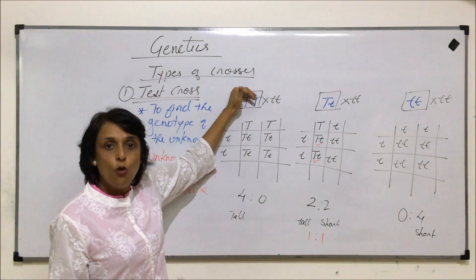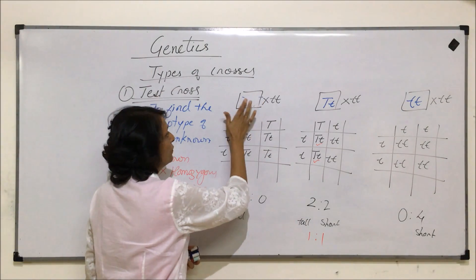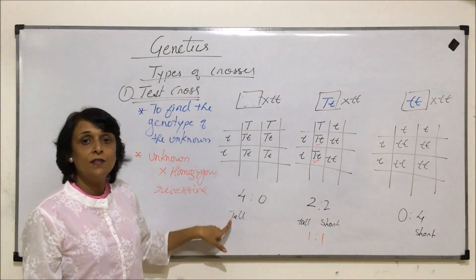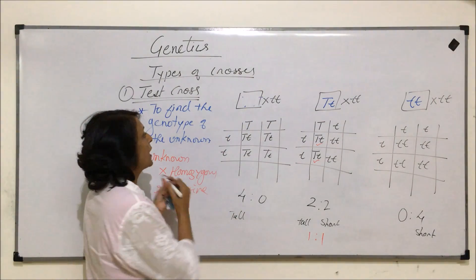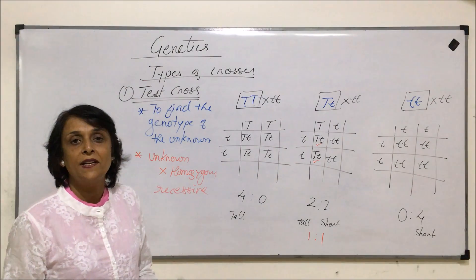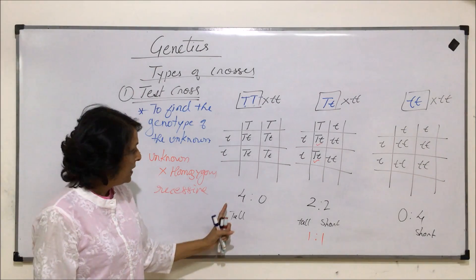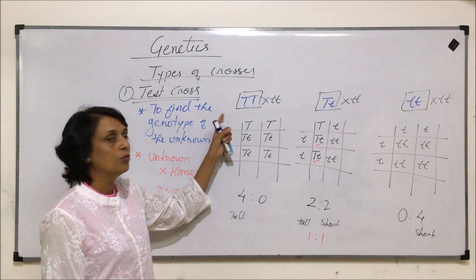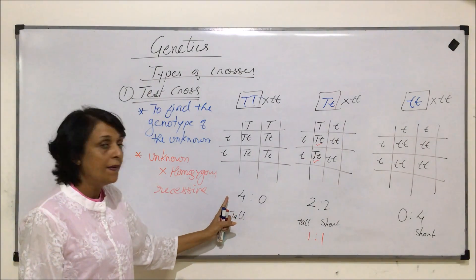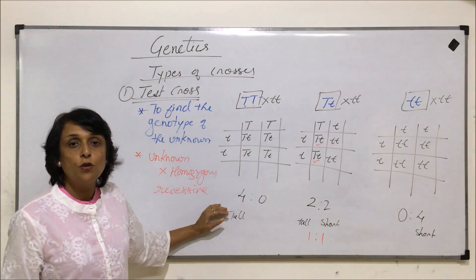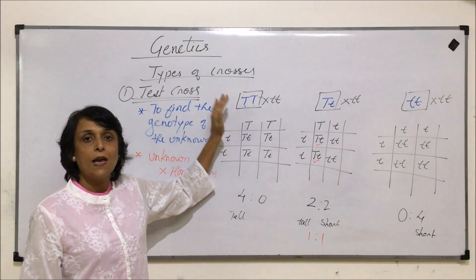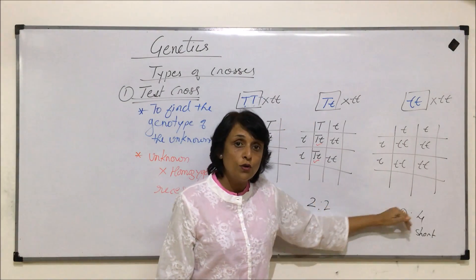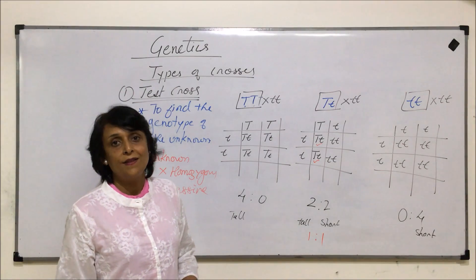To understand, we started with the known genotype, but if we remove that and track upward, the capital T for tallness coming from the unknown means its genotype is capital T capital T — homozygous dominant. So in a monohybrid test cross: ratio four is to zero means homozygous dominant; two is to two or one is to one means heterozygous; and zero is to four means homozygous recessive.